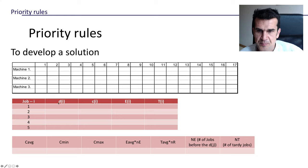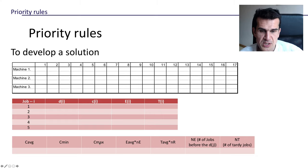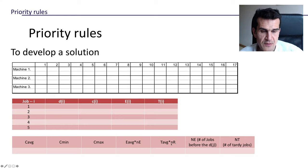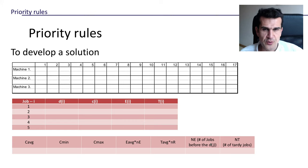In the next slides we are going to give you the due date for each job, the completion time once you have applied a certain priority rule, the earliness of each job, and the tardiness of each job. We're also going to give you the average completion time, the minimum completion time, the maximum completion time, the average earliness, the number of early jobs, the average tardiness, and the number of tardy jobs.